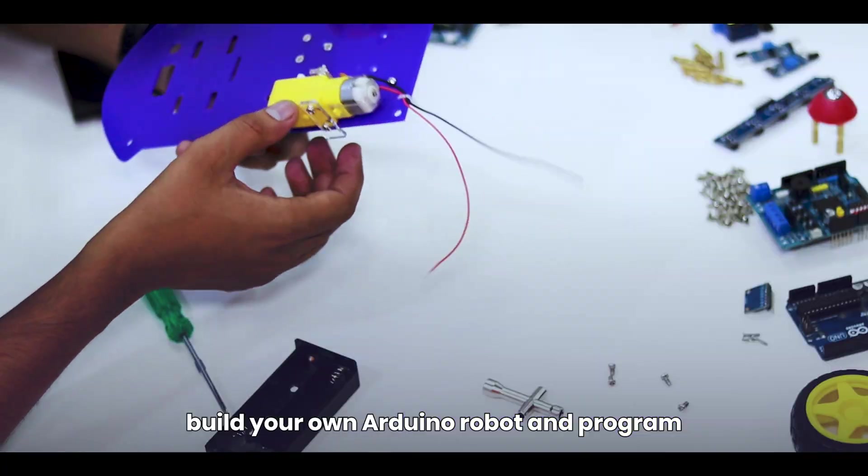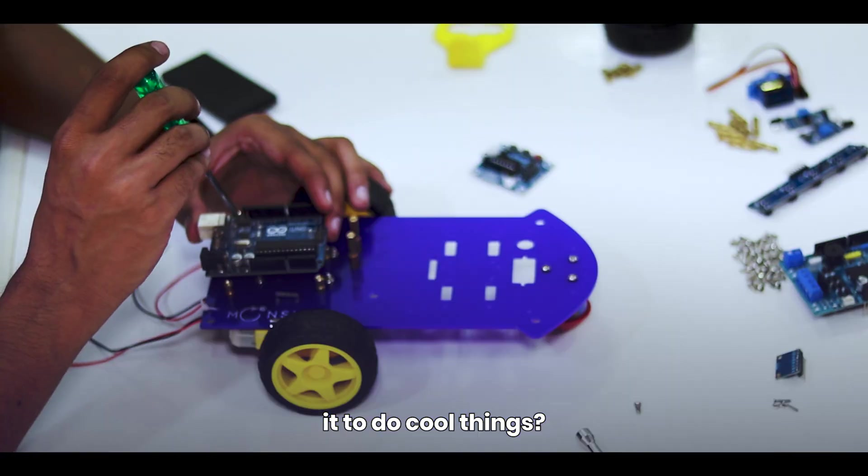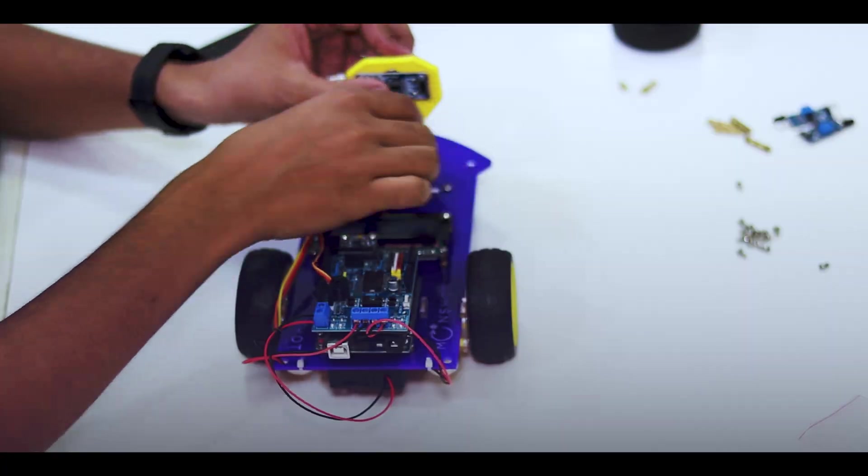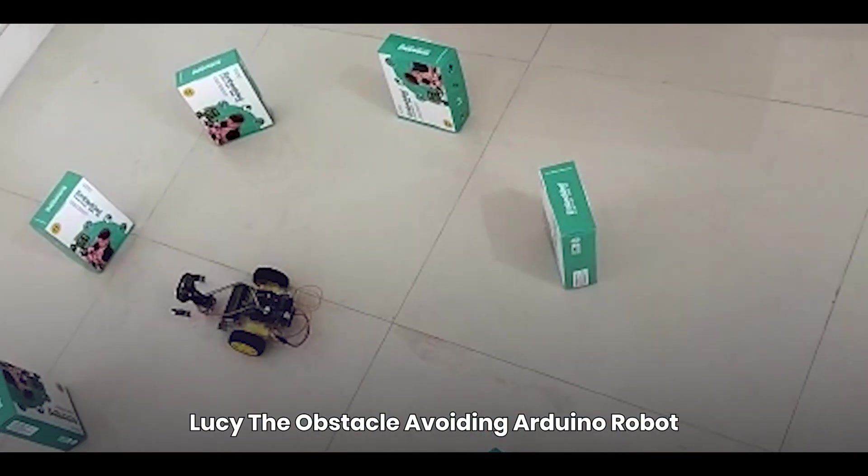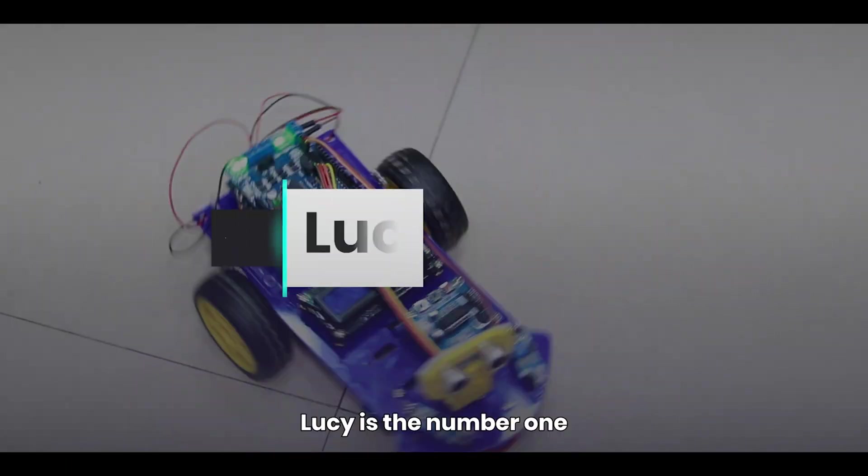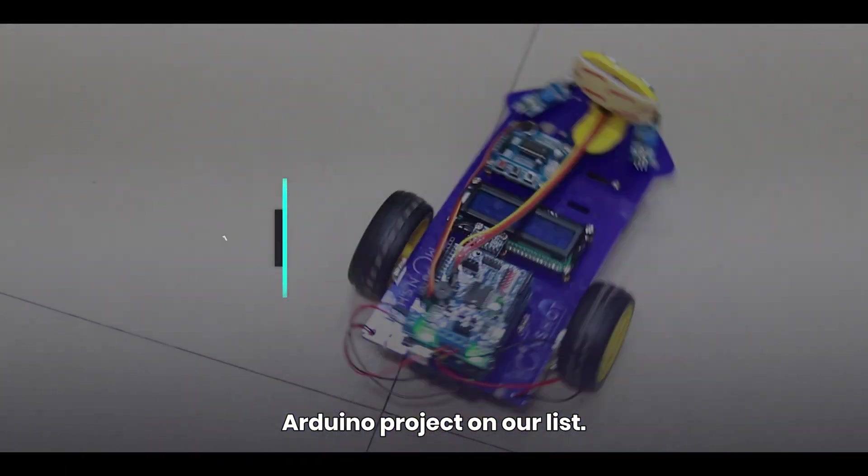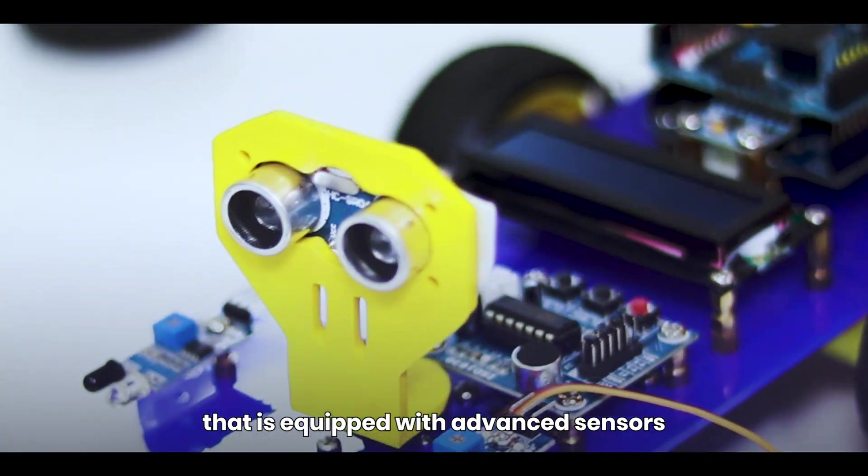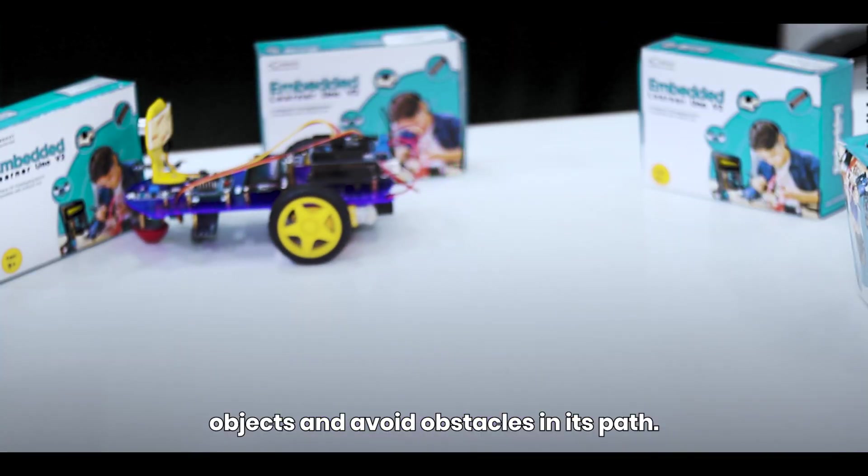Have you ever wanted to build your own Arduino robot and program it to do cool things? Introducing Lucy, the obstacle avoiding Arduino robot. Lucy is the number one Arduino project on our list. Lucy is not your ordinary Arduino project. It is a robot that is equipped with advanced sensors that allow it to detect objects and avoid obstacles in its path.